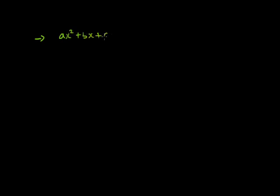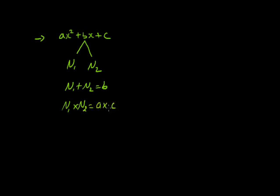Now we move to the next part. We have seen that the coefficient of x squared was 1. Now let's see expressions where x squared has some coefficient. When the expression is in the form of ax squared plus bx plus c, the process is that we divide b into two numbers n1 and n2 such that n1 plus n2 equals b and their product equals a into c, that is the coefficient of x squared multiplied by the constant term.